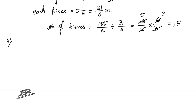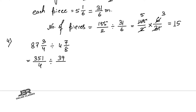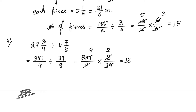Sum number 4: By what number should 4 whole 7/8 be multiplied to get 87 whole 3/4? You just divide 87 whole 3/4 by 4 whole 7/8. Convert: 87 × 4 + 3 = 351 by 4. Convert 4 whole 7/8: 8 × 4 + 7 = 39 by 8. Then 351/4 × 8/39: 351 ÷ 39 = 9, 8 ÷ 4 = 2. So 9 × 2 = 18. Your answer is 18.